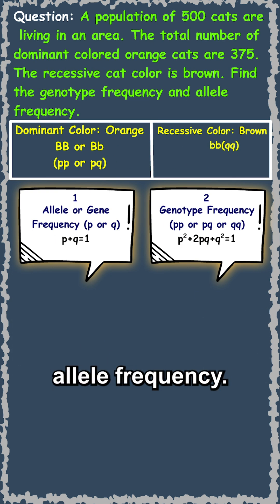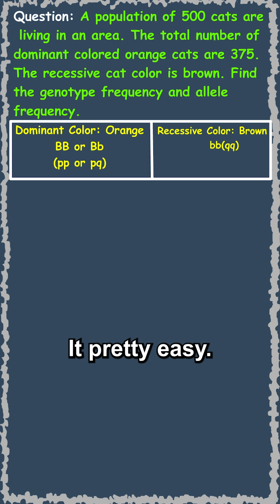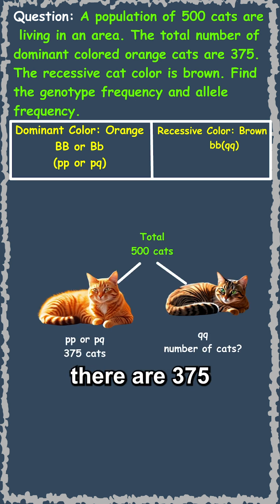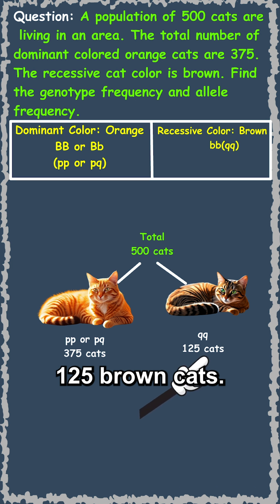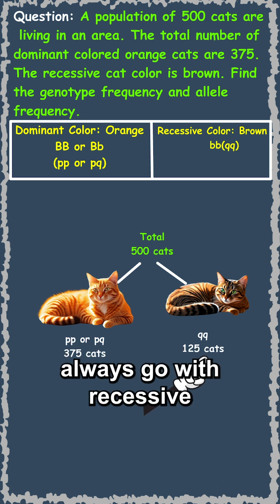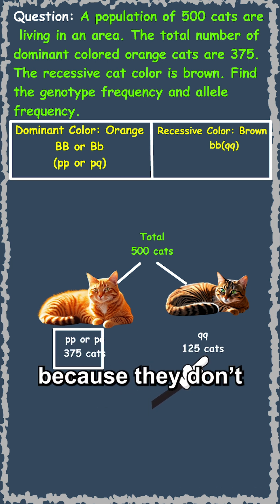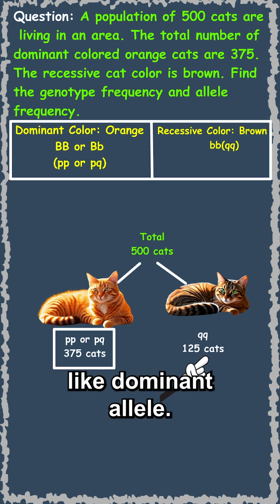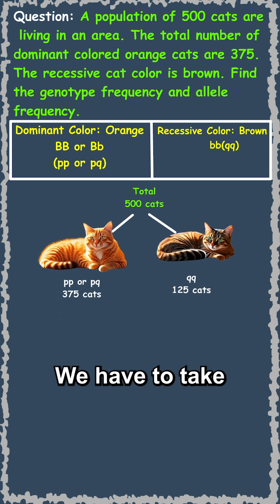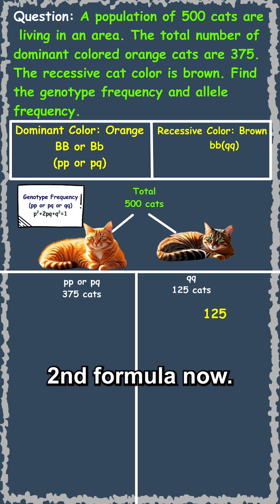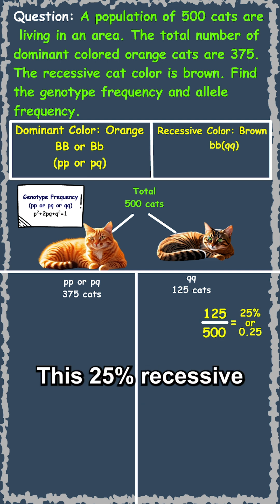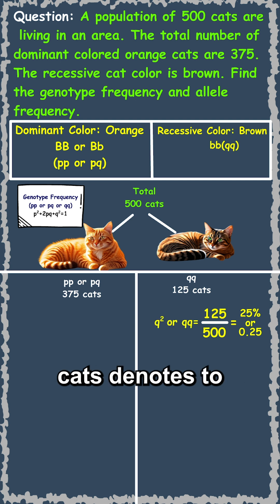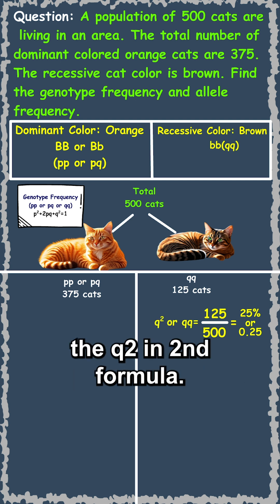First we have to find the allelic frequency — it's pretty easy. We know that there are 375 orange cats, which means we have 125 brown cats. Remember: always go with the recessive allele first because they don't have variations like the dominant allele. We have to take the second formula now. 125 out of 500 cats is 25%, and this 25% of recessive cats denotes q² in the second formula.